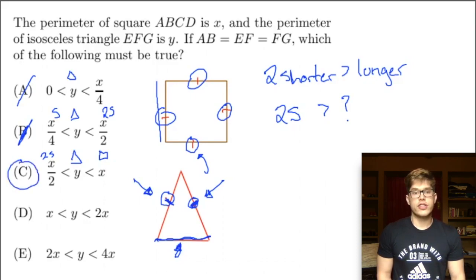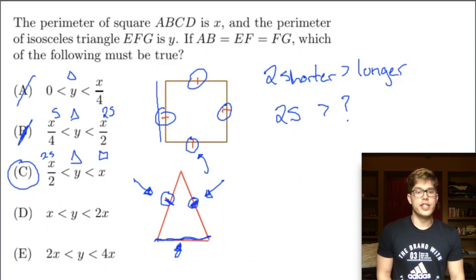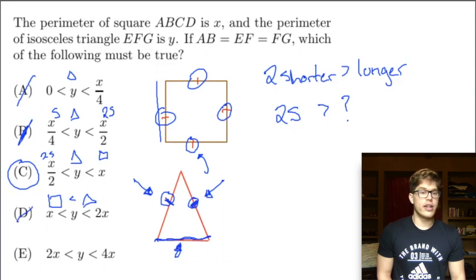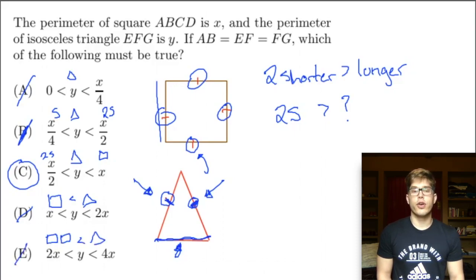Let's eliminate D and E to verify. D says the perimeter of the square is less than the perimeter of the triangle — we just found this to be false. E says two perimeters of our square is less than the perimeter of our triangle — also false. So our answer is C.